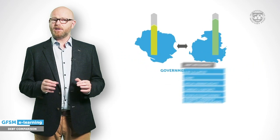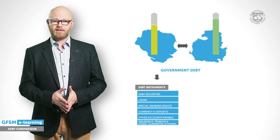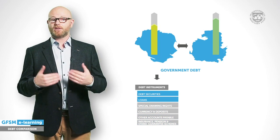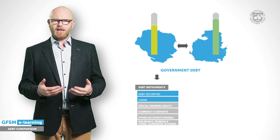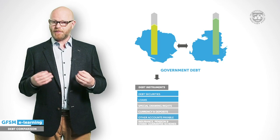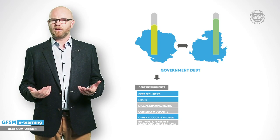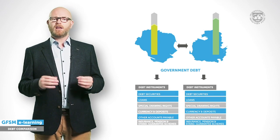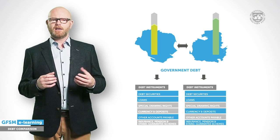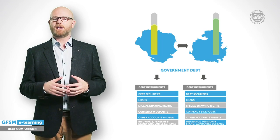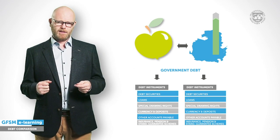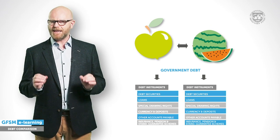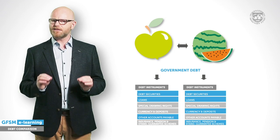However, in practice, this is not always the case. Some countries, for instance, only publish data on debt securities and loans. Many also report information on accounts payable, similar to unpaid bills, while others do not maintain such records. In such cases, comparing debt between countries can become an exercise of comparing apples with watermelons. The first step thus entails unraveling total gross debt data into various levels of debt instruments.